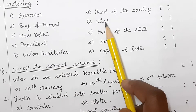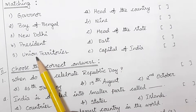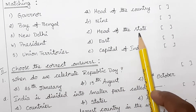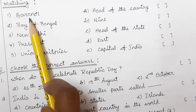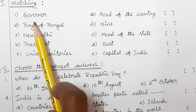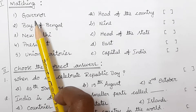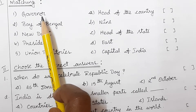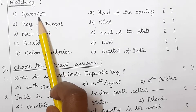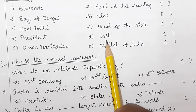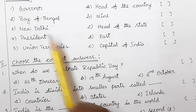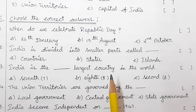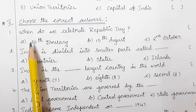Matching number nine — what are there in nine? Union territories. Next: head of the state — who is the head of the state? For Andhra Pradesh and remaining states, the Governor is the first person and head of the state. East: what is on the east side? Bay of Bengal. Capital of India: New Delhi.